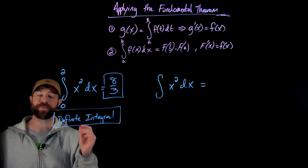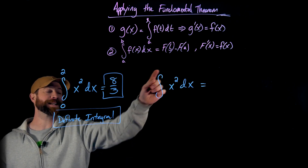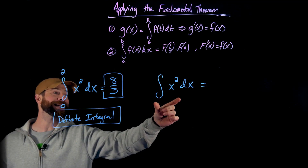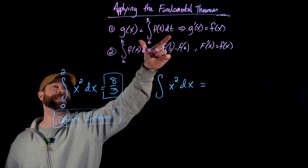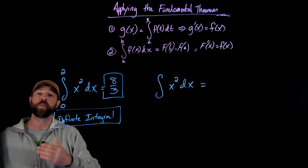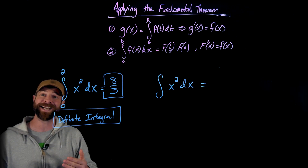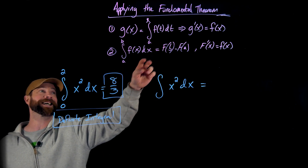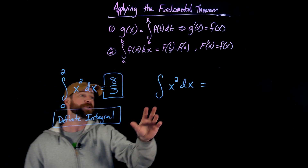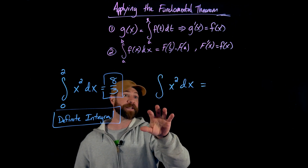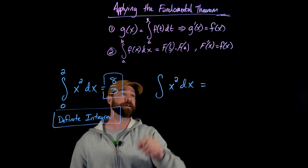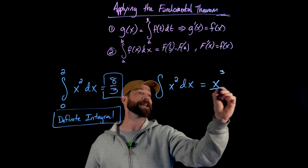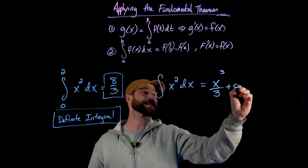The important difference is we have not specified the interval over which we're integrating. In that case, we are defining this statement to actually output the antiderivative, because we know an integral defined in this way is the antiderivative of this f function. So in our example, the indefinite integral of x squared ends up being the antiderivative of x squared, which is x cubed over three plus c.